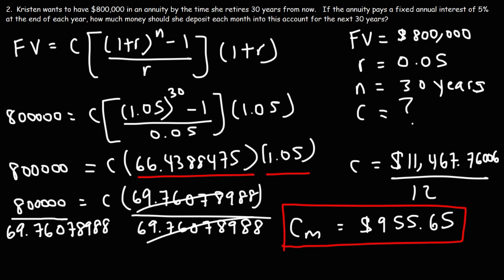So if she deposits about $956 every month and receives a fixed annual interest rate of five percent, at the end of 30 years she will have saved $800,000 in this annuity. That's how you calculate the amount you need to deposit each month to achieve a target account value in the future. Thanks for watching and don't forget to subscribe to this channel.